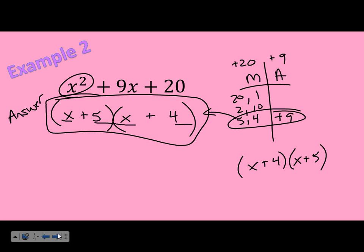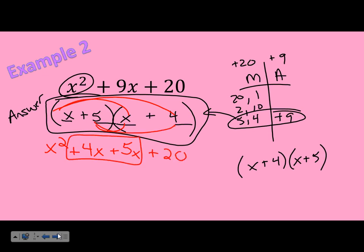From now on, on your homework, you need to have a check step. I promise to show a check step, and if I don't show a check step, I get a 50 — because it's half the problem. Half the problem is getting the answer, and half is making sure you're right. So here's the check: x times x is x squared, x times 4 is 4x, 5 times x is 5x, and 5 times 4 is 20. When you add the middle terms, you get 9x in the middle. The check matches up!